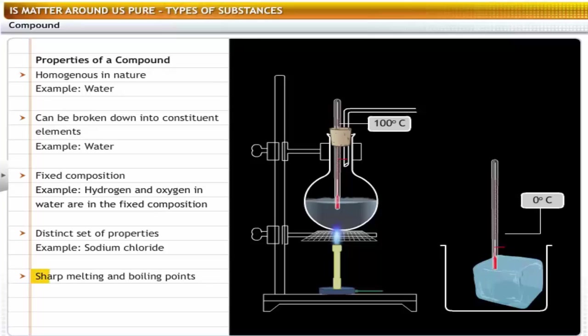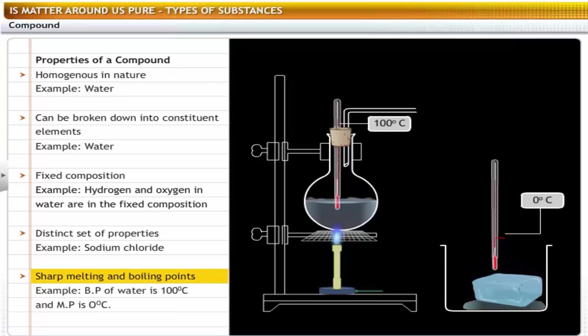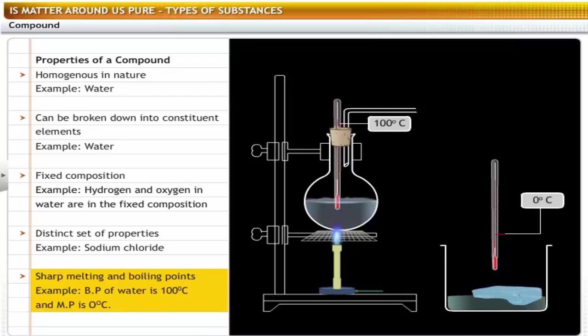From this we can say that compounds exhibit a distinct set of properties. A compound has a sharp melting and boiling point. For example, water has a boiling point of 100 degrees centigrade and a melting point of 0 degrees centigrade.